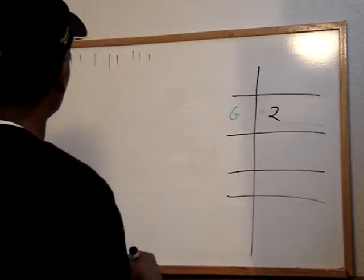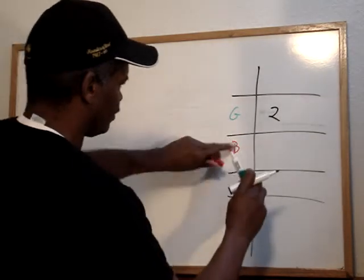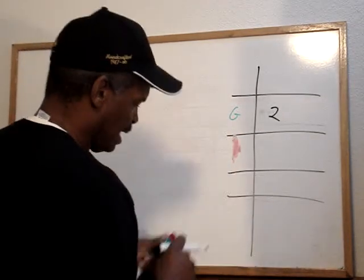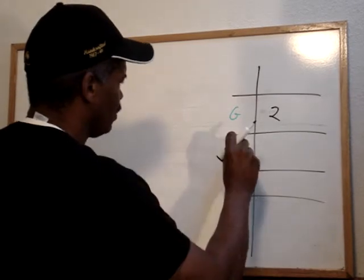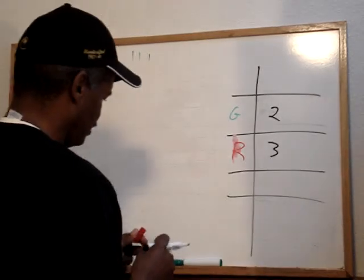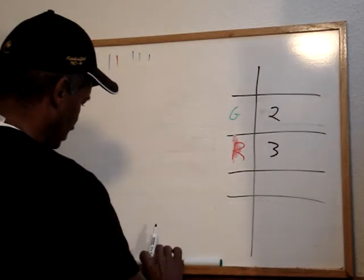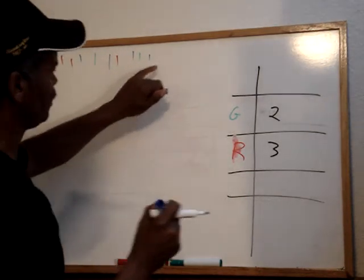How many times do we have a red? 1, 2, 3. Sorry about that. We have a red event three times. How many times do we have a blue event? 1, 2, 3, 4, 5.